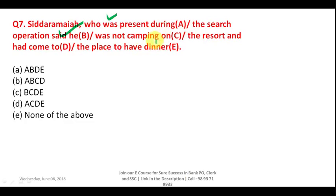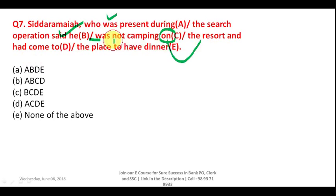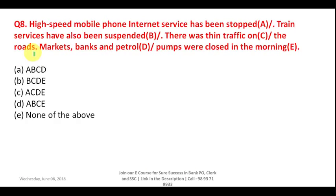'On' is used for surfaces — when you put something on a surface. 'In' is used for bigger areas like countries or states, for example 'he is living in India.' 'At' is used for a particular point, and here the resort is being used as a particular point. So part C is wrong and your answer is A, because A contains the combination without C.